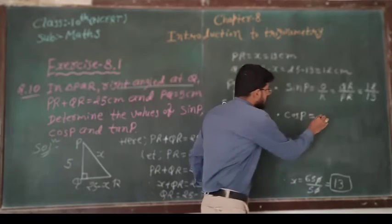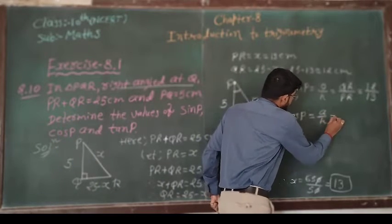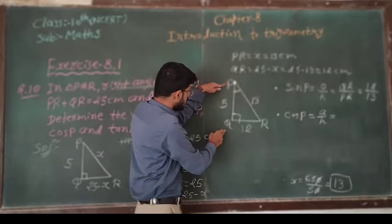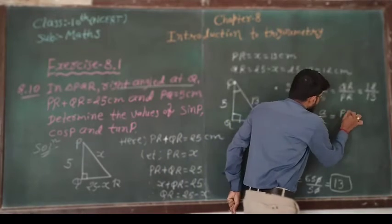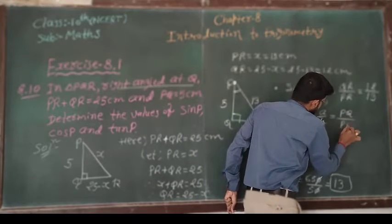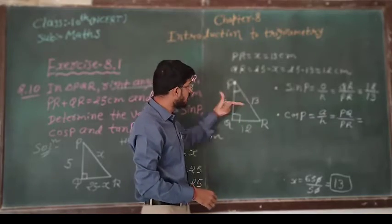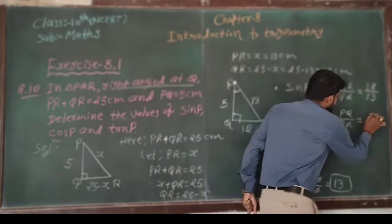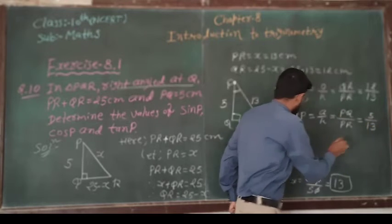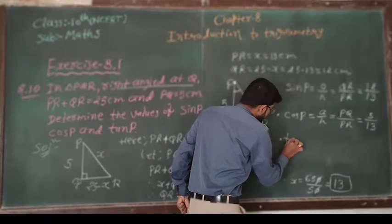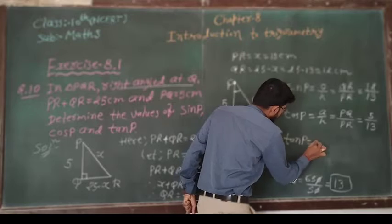Next, cos P. Cos is given by adjacent side upon hypotenuse. Adjacent side of angle P is PQ upon PR. So the value is 5 upon 13.